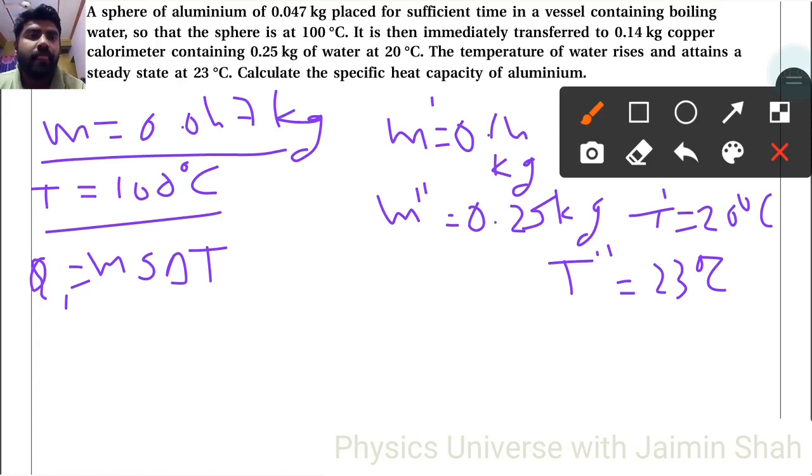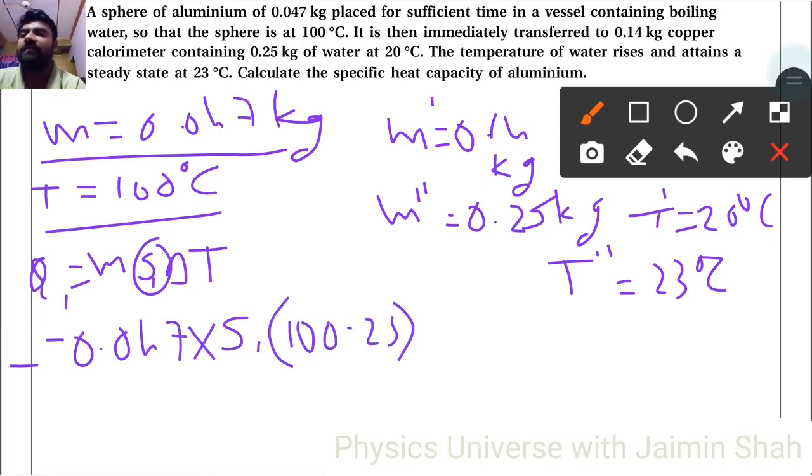The mass is 0.047 into S1, and delta T is 100 minus 23, which equals 77. So 77 times 0.047 gives us 3.619 S1.